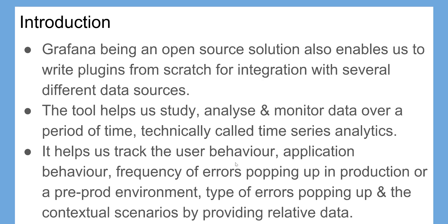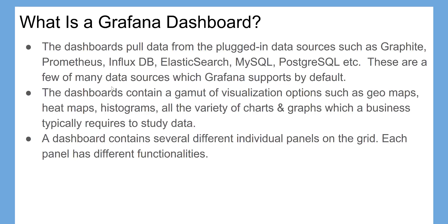It helps us track user behavior, application behavior, frequency of errors popping up in production or a pre-prod environment, type of errors popping up, and the contextual scenarios by providing relative data. The dashboards pull data from plugged-in data sources such as Graphite, Prometheus, InfluxDB, Elasticsearch, MySQL, PostgreSQL, etc. — these are a few of the many data sources which Grafana supports by default.